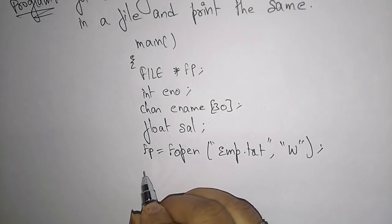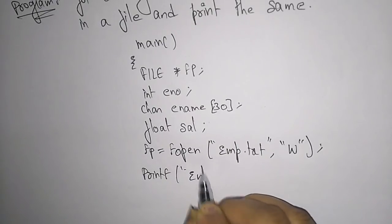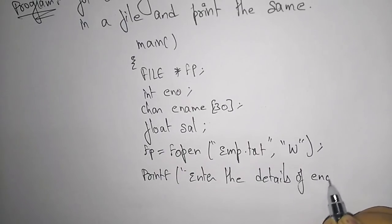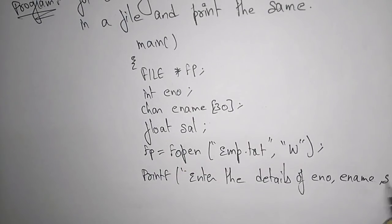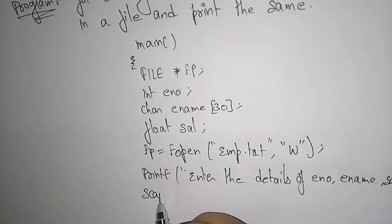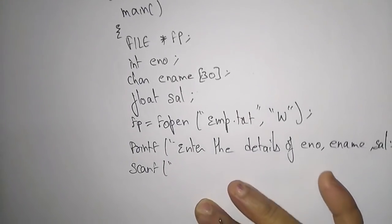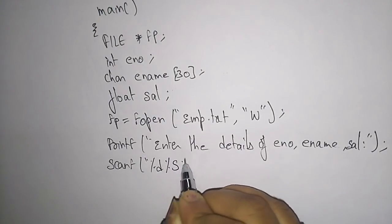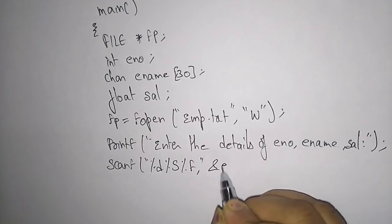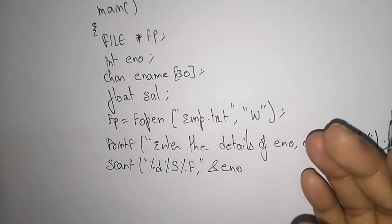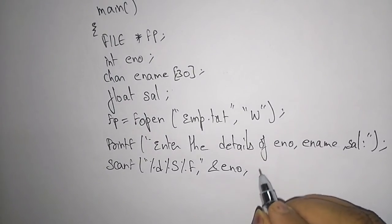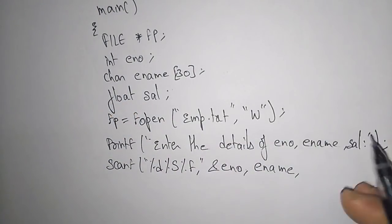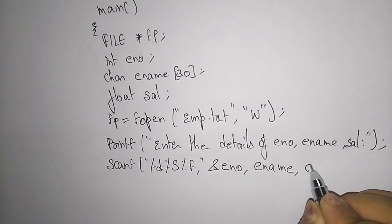Now I am writing printf to prompt: enter the details — employee number, employee name, salary. Then I write scanf to read and store the values: %d for integer, %s for character string, %f for float. Ampersand e_number stores the value at that location, e_name needs no ampersand since it's a character array, and ampersand salary.